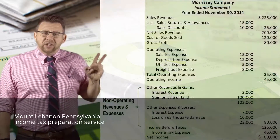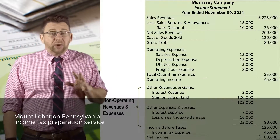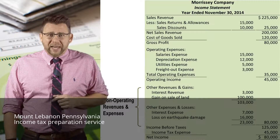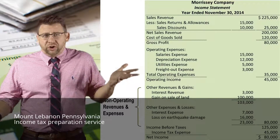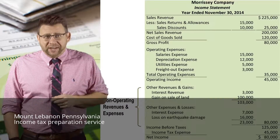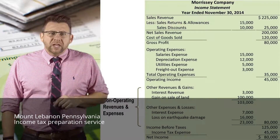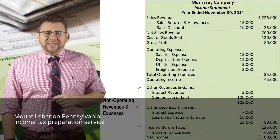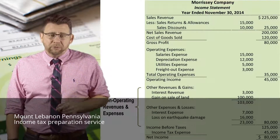The next section of the income statement reports non-operating revenues and expenses. These items are either one-time amounts, like gain on sale of land or loss from earthquake damage, or items not part of central operations, like interest revenue, which is earned by making a loan, or interest expense, which is incurred by financing assets with debt. This section is sometimes known as the other section. Other revenues and gains are added to operating income, and other expenses and losses are deducted from operating income. This gives us a new subtotal called income before taxes.